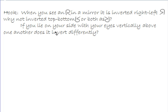We start with a somewhat interesting hook: when you look at the letter R in a mirror, it gets flipped backwards. But why is there a right-left inversion and not a top-bottom inversion, or both? If you think it's because your head has bilateral symmetry down the middle of your nose, consider: if you lay on your side and looked in a mirror, would that give you a top-bottom inversion? It would not.